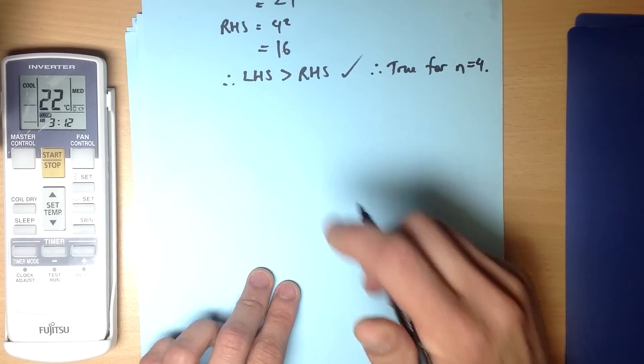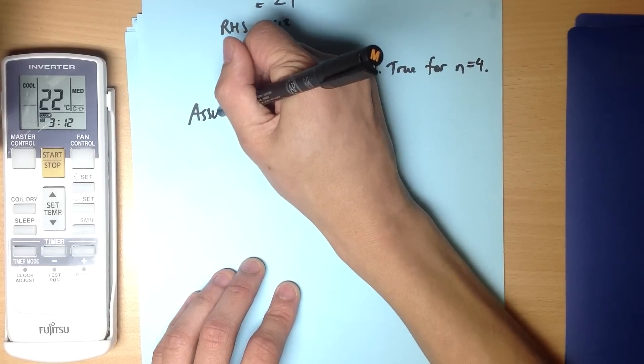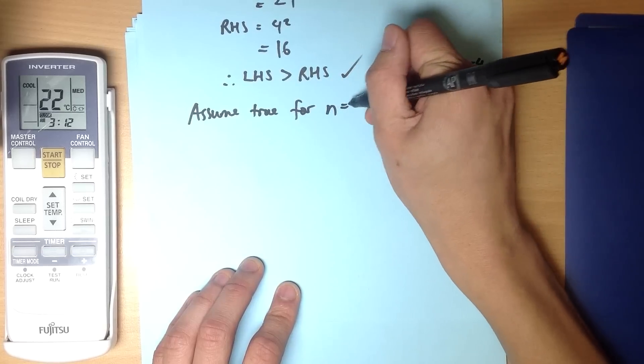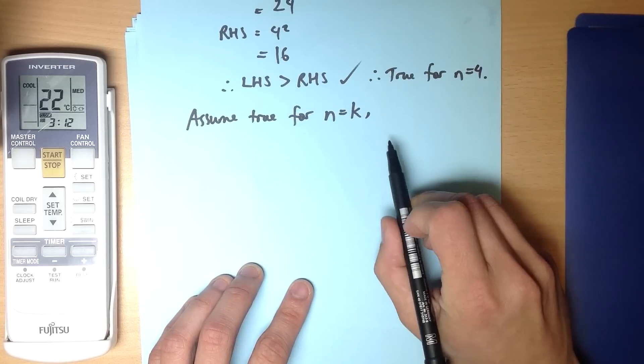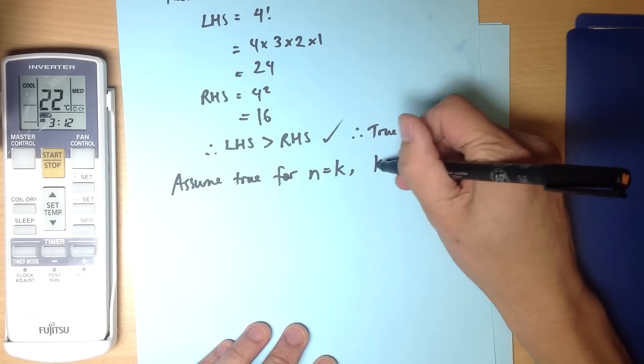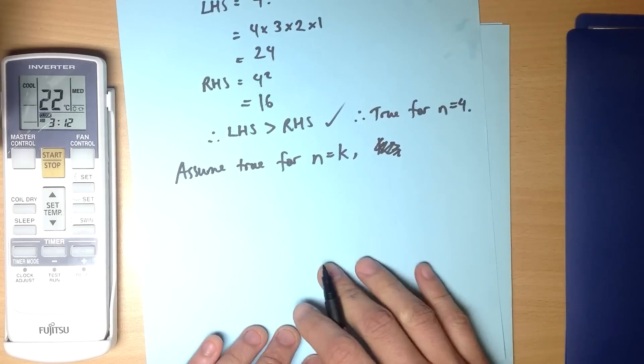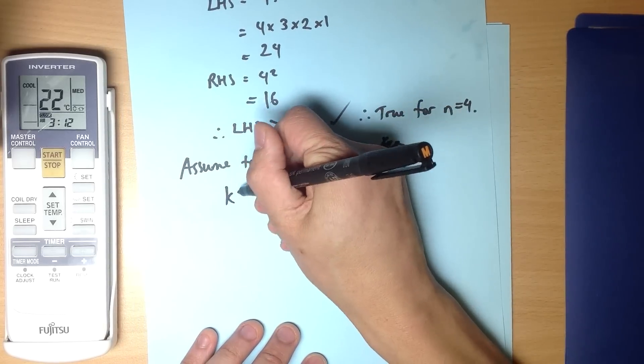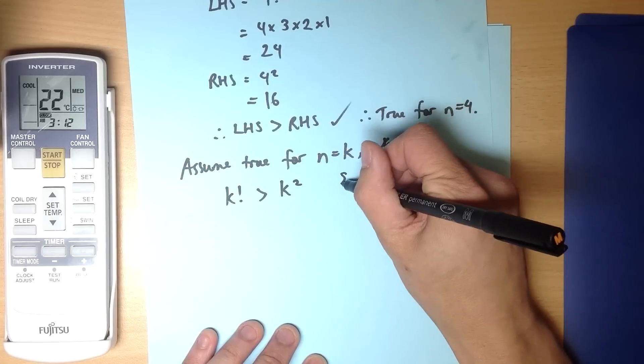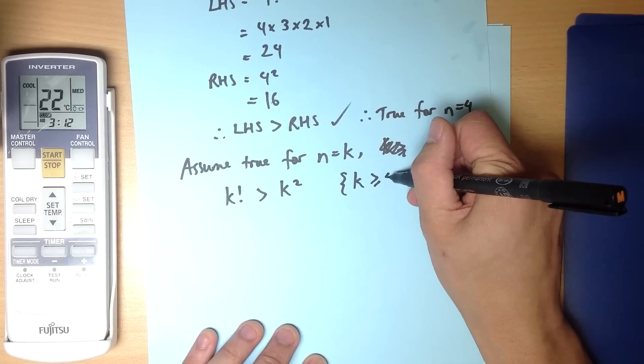Now let's keep going. I want to assume the statement is true for some arbitrary value k which follows the same rules as n which I've already set up. So what does the statement look like? k factorial is greater than k squared, which is true for k greater than 4.